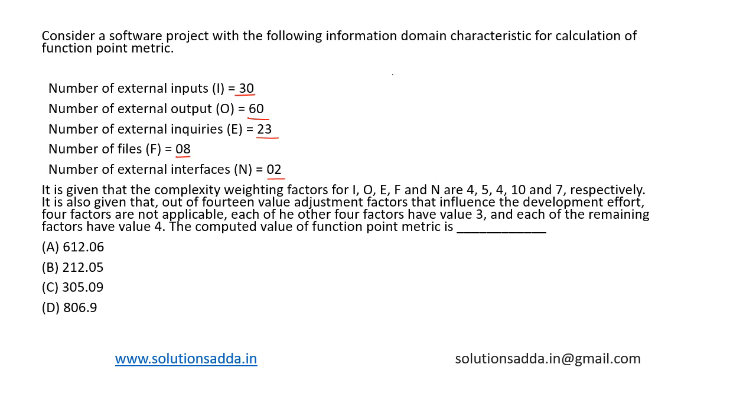It is given that the complexity weighting factors for I, O, E, F, and N are 4, 5, 4, 10, and 7 respectively. It is also given that out of 14 adjustment factors that influence the development, 4 factors are not applicable. Each of the other 4 factors have a value 3, and each of the remaining factors has a value 4. The computed value of function point metric is what?